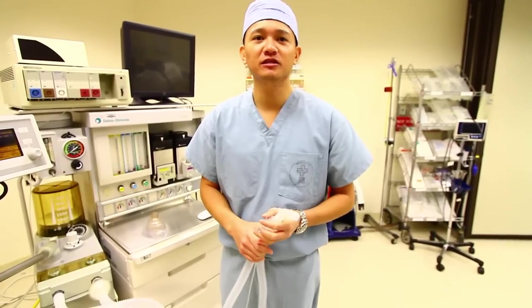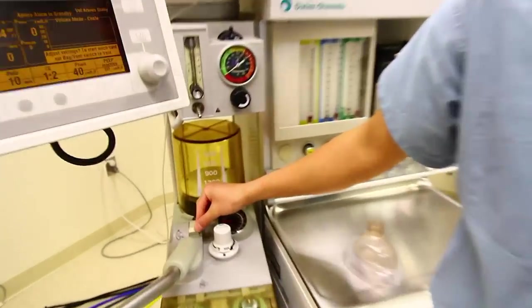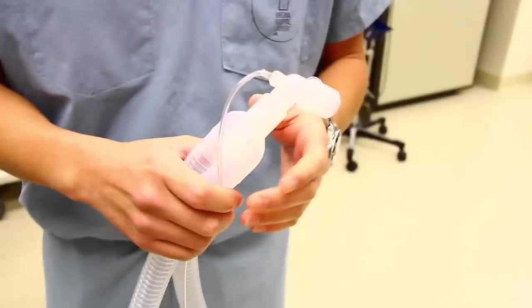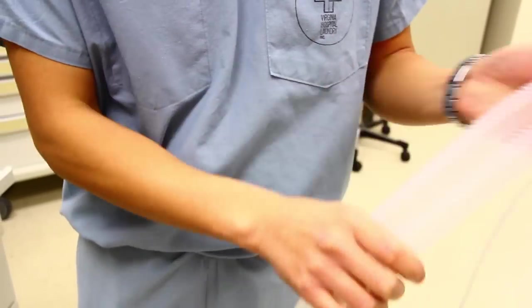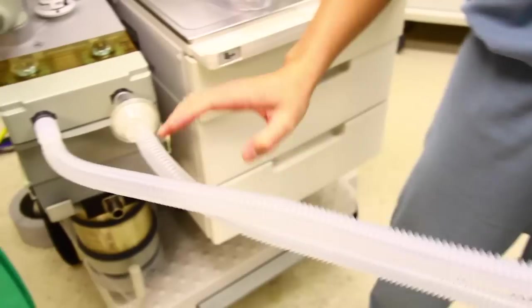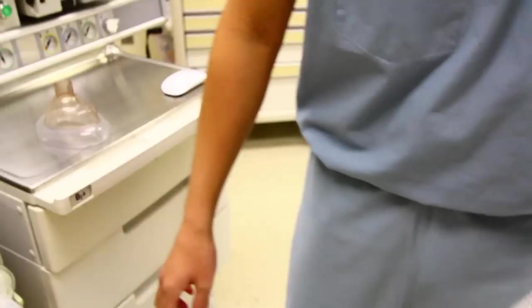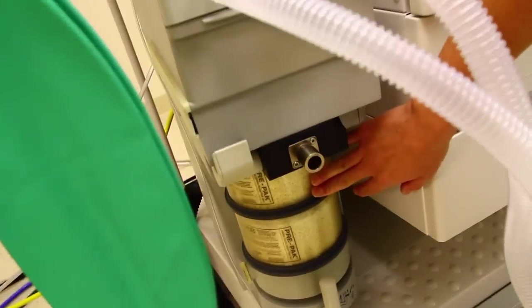The next thing you want to do is check the initial status of the breathing system. Ensure that the switch is set to bag mode. Ensure that the breathing circuit is undamaged. Check it at the Y piece. Check the tubing is undamaged and that it's connected to the machine properly and is tight. Also verify that the CO2 absorbent is adequate.